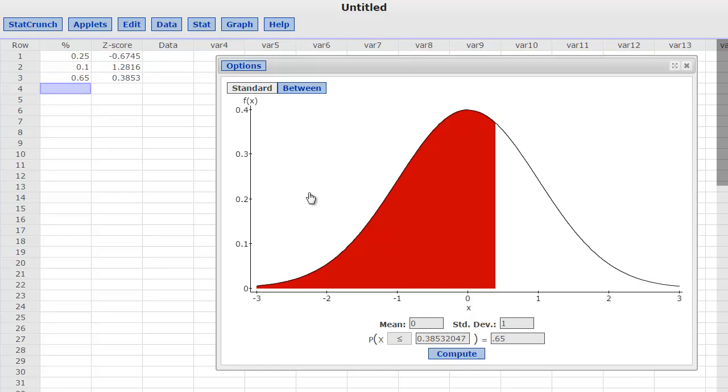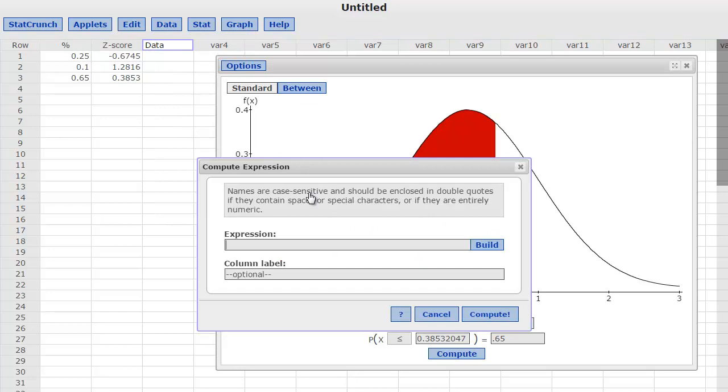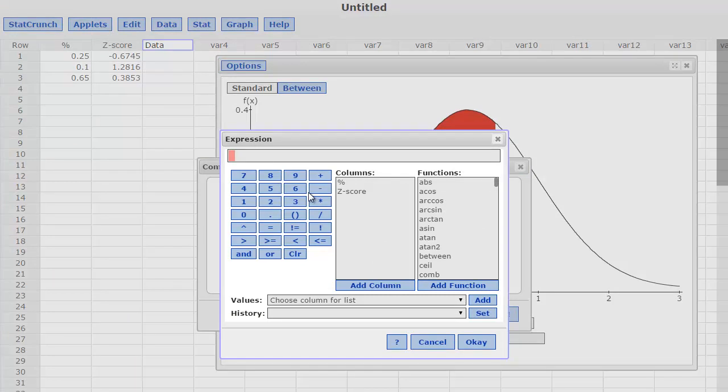Now how do I actually get the data value here? I have to convert this z-score to a data point. Now another nice thing about StatCrunch is that here you can actually compute an expression, and you can compute an expression for this whole column. What I want to do is build it. So I'm going to take that z-score and build a function up here.